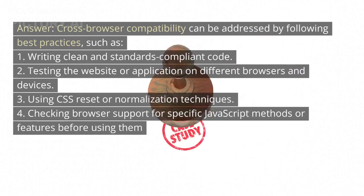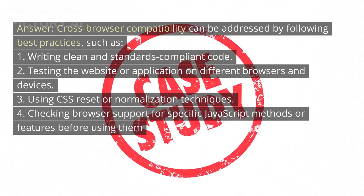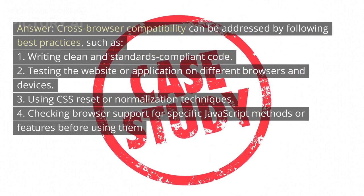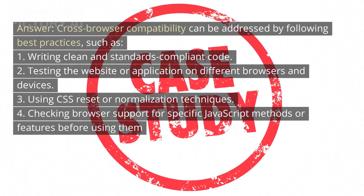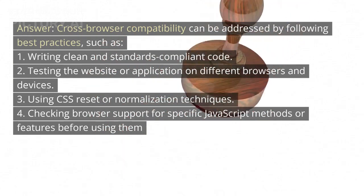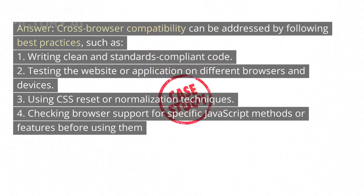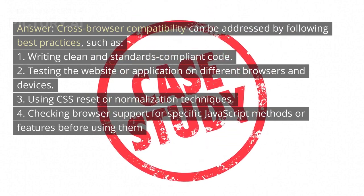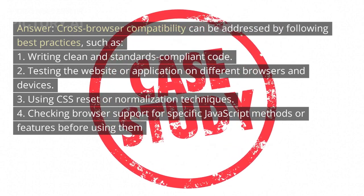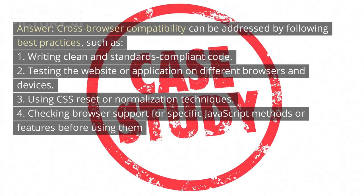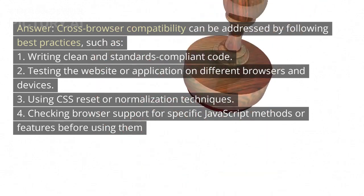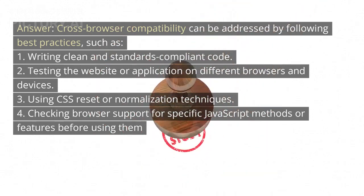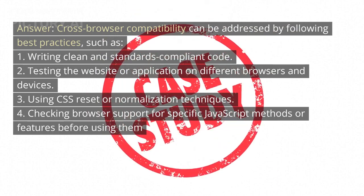Question 5: How do you handle cross-browser compatibility issues? Answer: Cross-browser compatibility can be addressed by following best practices, such as: 1. Writing clean and standards-compliant code. 2. Testing the website or application on different browsers and devices. 3. Using CSS reset or normalization techniques. 4. Checking browser support for specific JavaScript methods or features before using them.